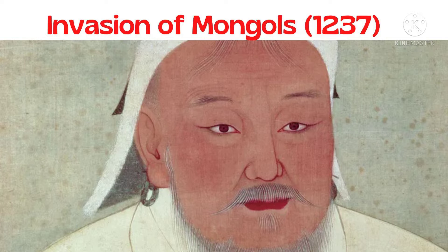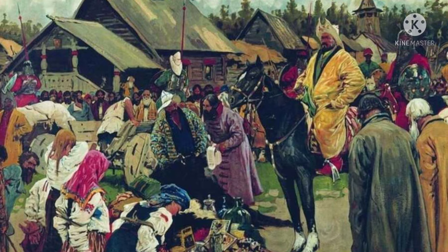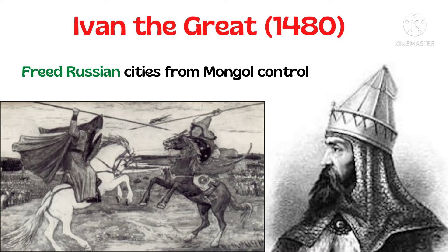Invasion of the Mongols, 1237 AD. Most of Russia was conquered by the Mongols. States were forced to pay tribute to the Mongols, who controlled Russia for the next 200 years. The city of Novgorod remained in Russian control.